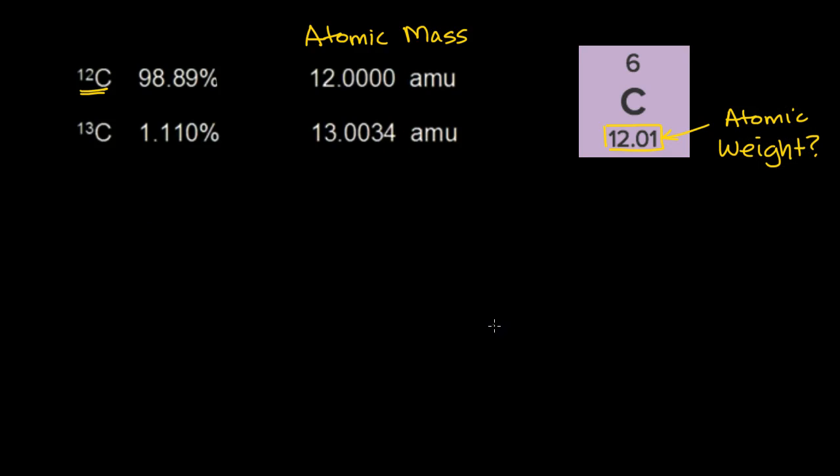Well, in the video on atomic weight and on atomic mass, we see that the atomic weight is the weighted average of the atomic masses of the various isotopes of that element. So to find this roughly 12.01, we take the weighted average of these two things. And what are we weighted by? Well, we weighted by how common that isotope actually is.